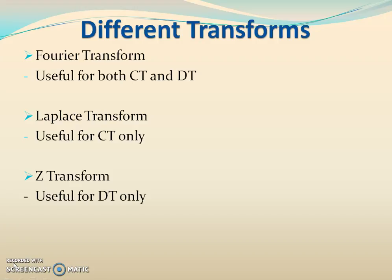First one is Fourier transform. Fourier transform is used for both continuous time and discrete time signals and systems. Second one is Laplace transform. Laplace transform is used only for continuous time signals. And next is Z transform which is used for only discrete time signals.